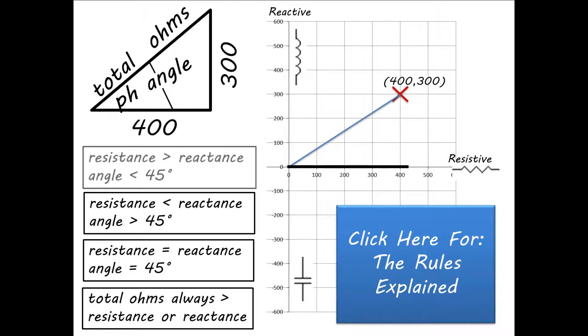Then remember the rules. Our resistance is greater than reactance, and so our angle is less than 45 degrees.